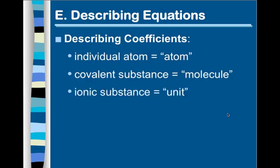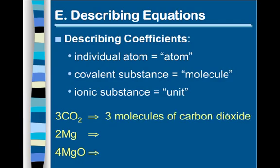And an ionic substance, we refer to as a unit. Let's look at these three examples. Remember, an ionic substance contains a metal or a polyatomic ion. Let's look at these three examples. The first one is 3CO2. Well, carbon and oxygen are both nonmetals. So, that means they have covalent bonds, which means that it is a molecule. So, we have three molecules of carbon dioxide.